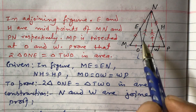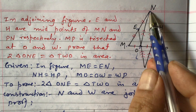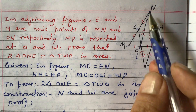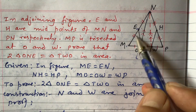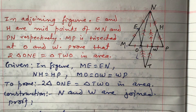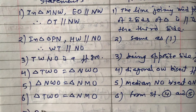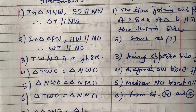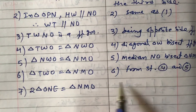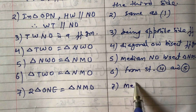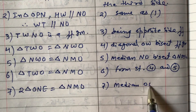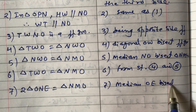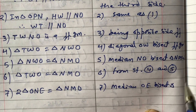Statement 7: In triangle NMO, OE is the median. Therefore the median OE bisects triangle NMO, which means two times the area of triangle ONE equals the area of triangle NMO.